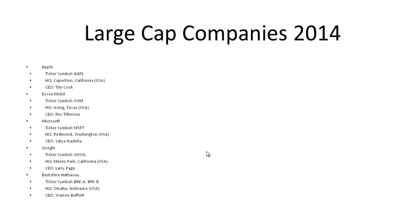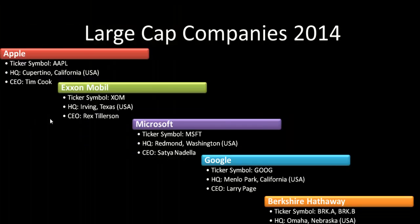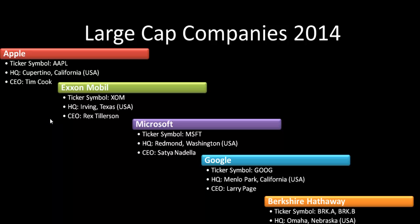This is an okay way to start off because basically we've got a main bullet point and we've indented it out for sub-bullets for these large cap companies and information about them like Apple, Exxon, and Microsoft. And maybe instead of having plain bullet points like this, we want to spice it up, give it a little bit more visual appeal, make it look like something like this or something like this.